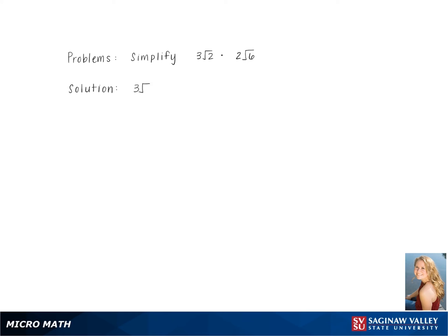To simplify 3 square root 2 times 2 square root 6, we start by multiplying the outside and inside of the radical, giving us 3 times 2, which is 6, and 6 times 2, which is 12.